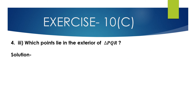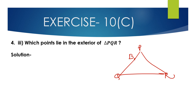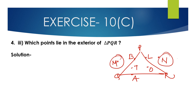Third bit: which points lie on the exterior of triangle PQR? Exterior means outside the triangle. The points M and N lie exterior to triangle PQR.